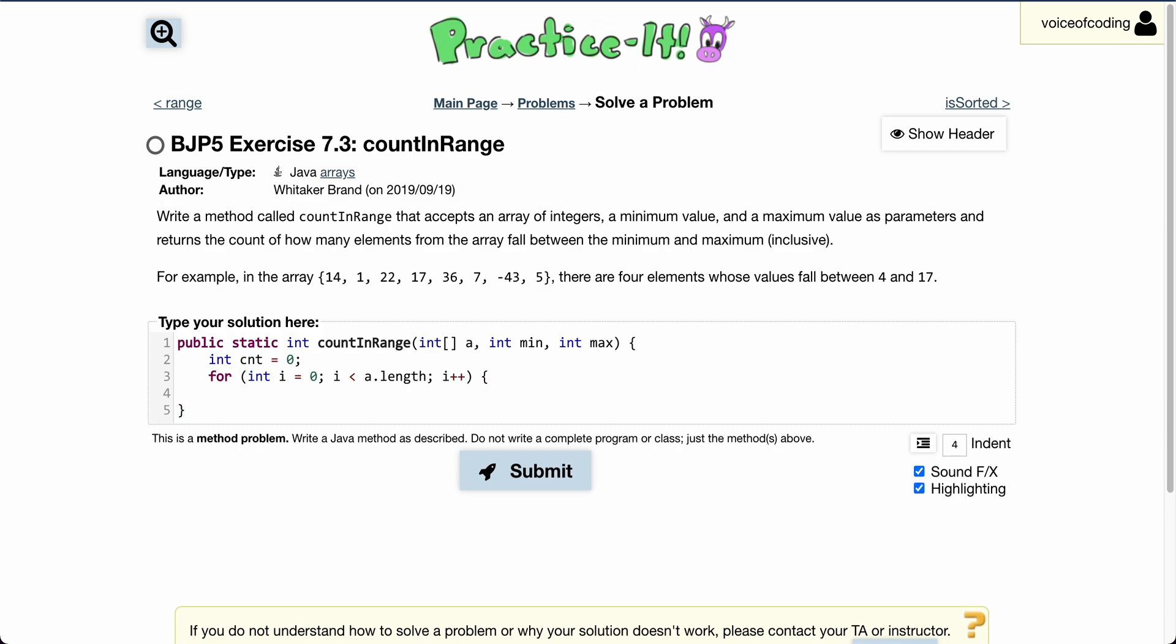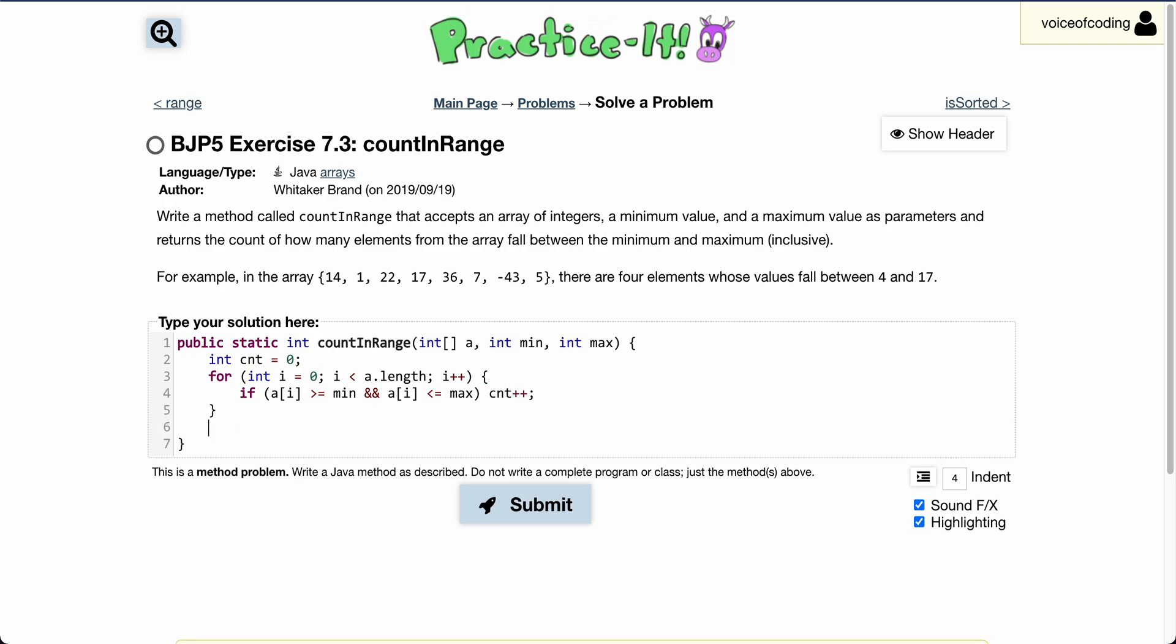If the element is greater than or equal to the minimum and less than or equal to the maximum, we increment count. Then we return count.